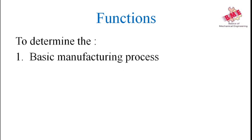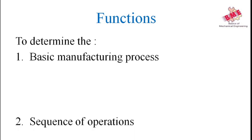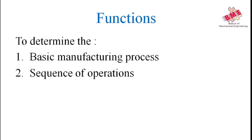Now we will see the functions of process engineering. The first function is basic manufacturing processes — after getting the design from the design department, we have to decide what basic manufacturing processes are used for the manufacturing. The second function is sequence of operation, meaning the operations such as milling, turning, shaping, and grinding are to be sequentially organized to manufacture the product.